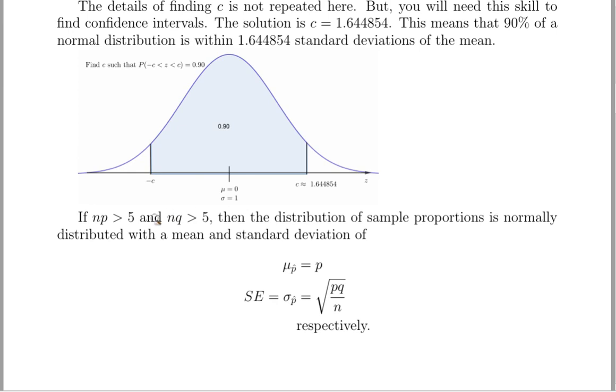Now, under the right assumptions, the distribution of sample proportions will be normally distributed. There's the conditions that make that happen, and the mean of the sample proportions will be equal to the probability of success, the proportion of the entire population, and the standard deviation, we'll sometimes refer to this as a standard error, is equal to the square root of P times Q divided by N.